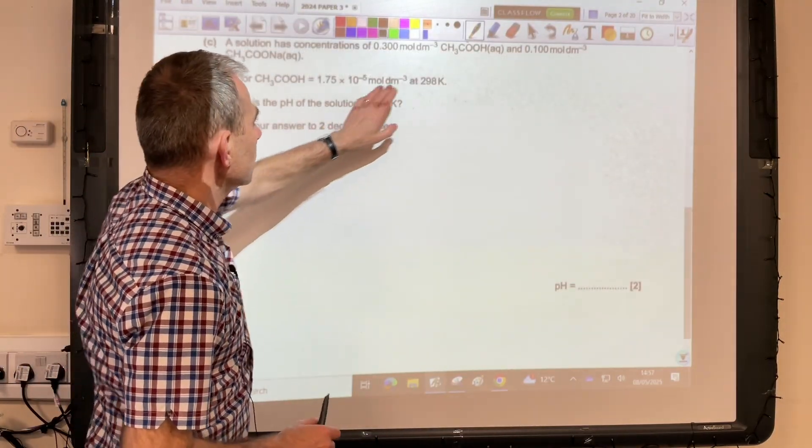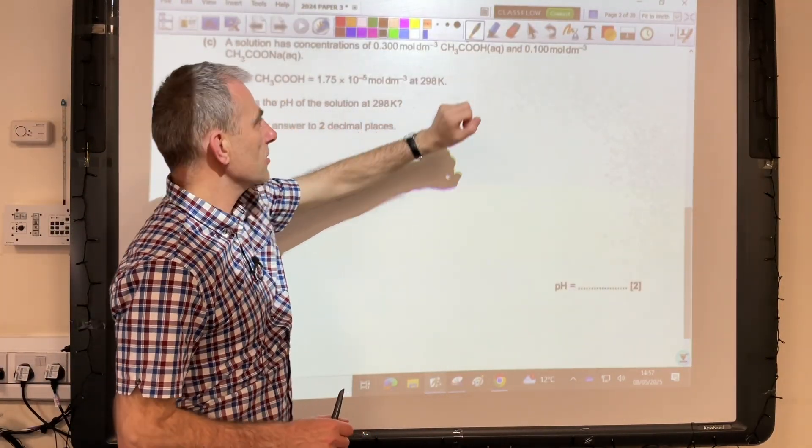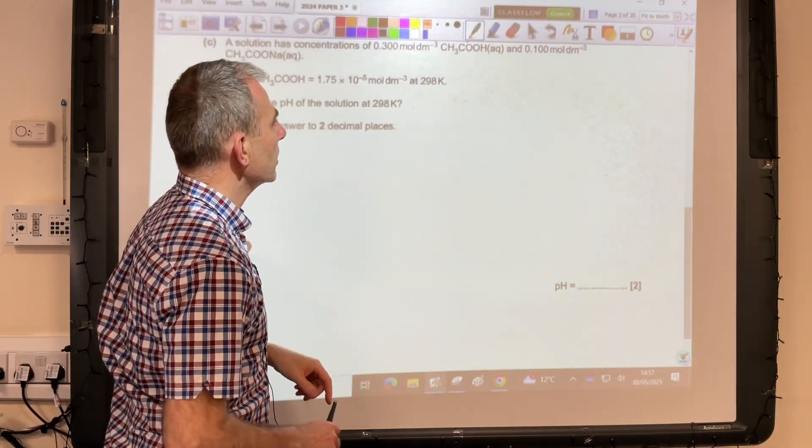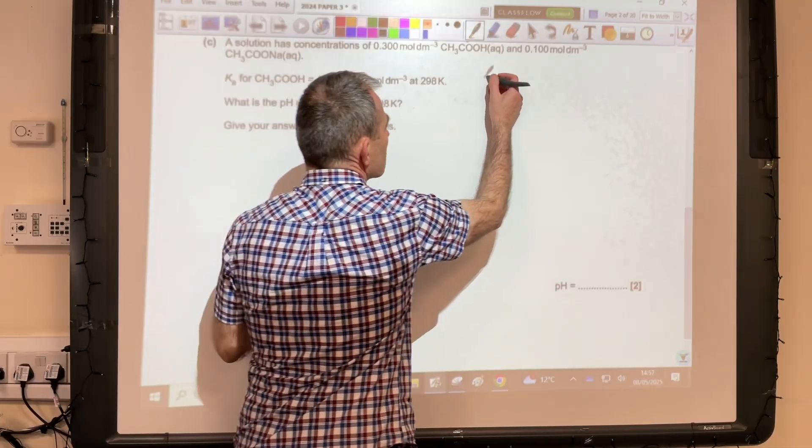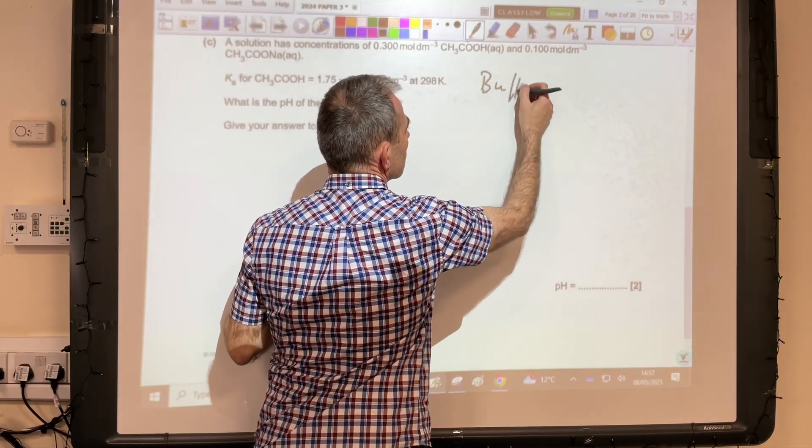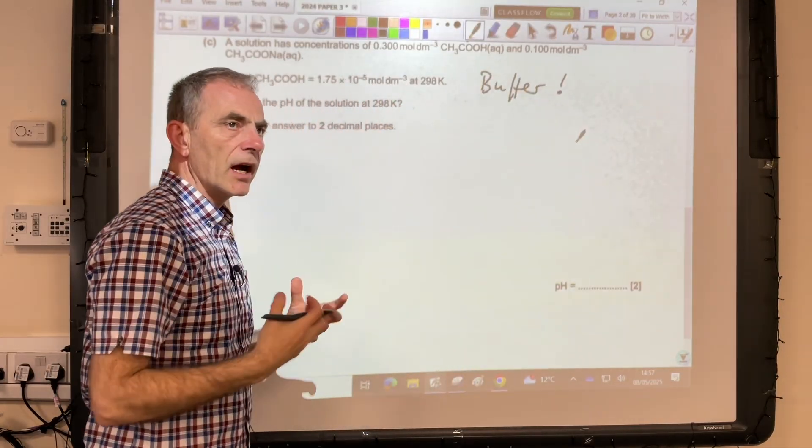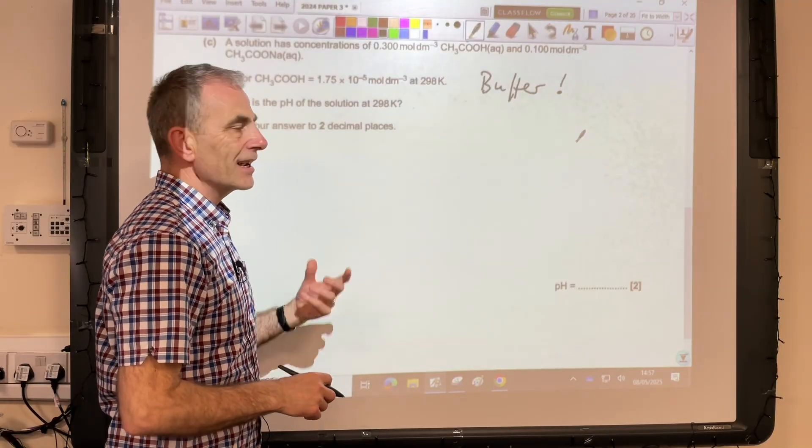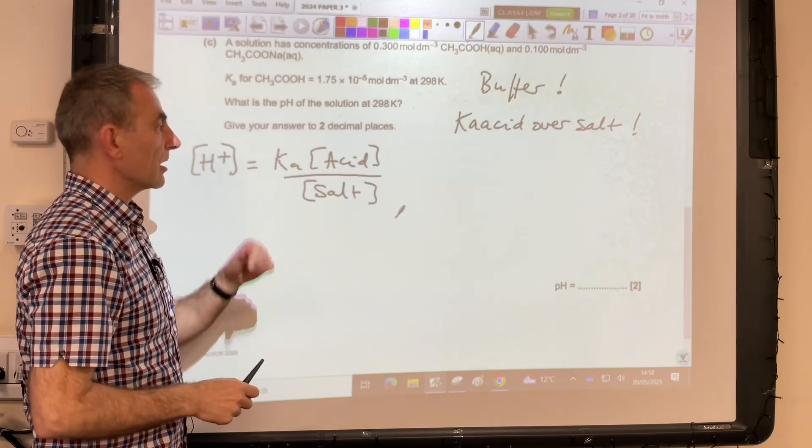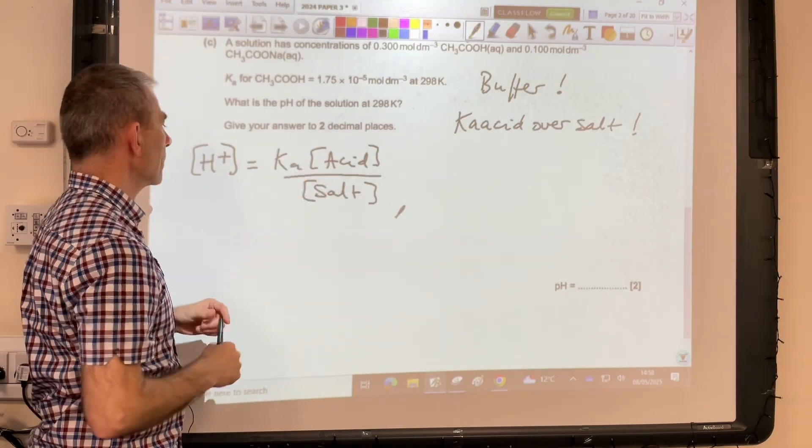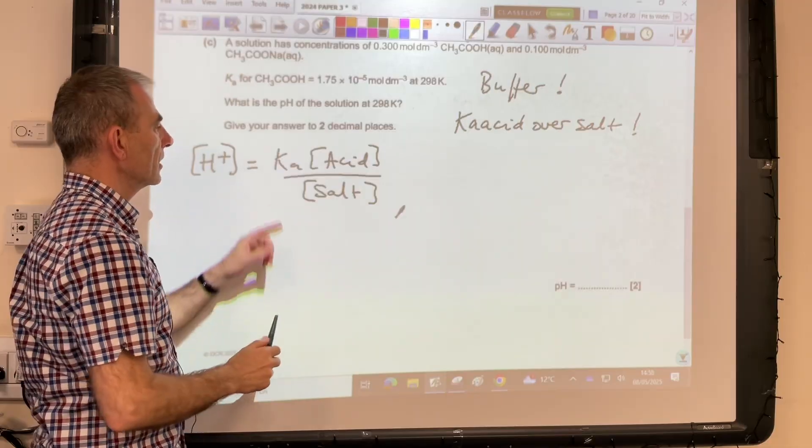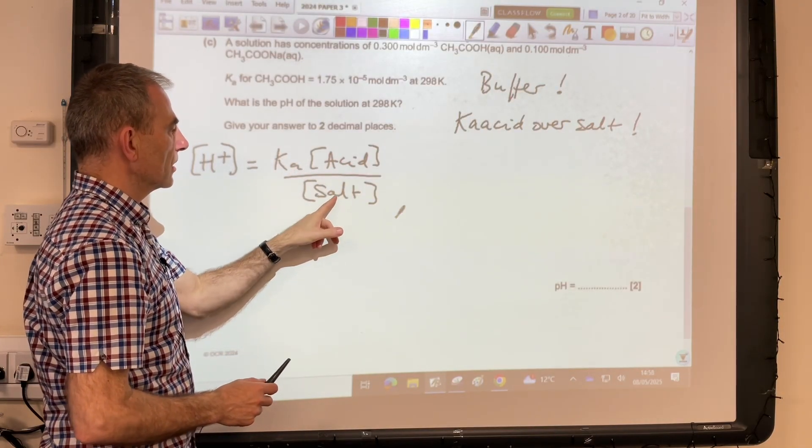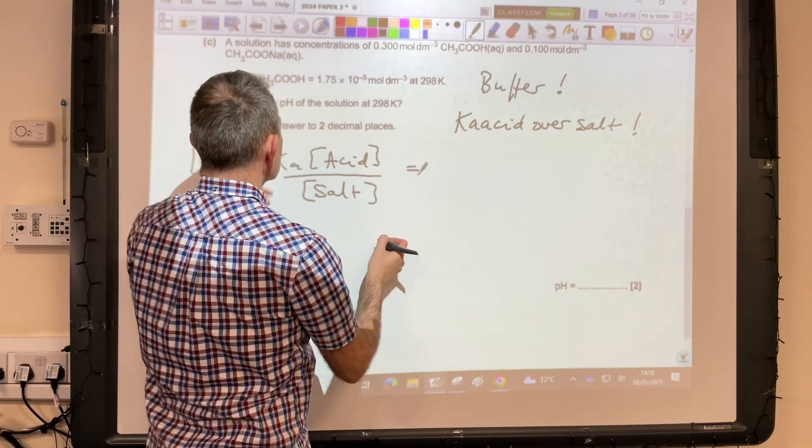Part C: We've got a solution made up from ethanoic acid, which is a weak acid, and sodium ethanoate, which is the salt of the weak acid, so we've got a buffer solution. The way I remember the H⁺ concentration—and I get my students to think about it like this as well—is cast it over salt. The purpose of that word is just to get their formula the right way around. The H⁺ concentration of a buffer is equal to the Ka multiplied by the acid concentration divided by the salt concentration.